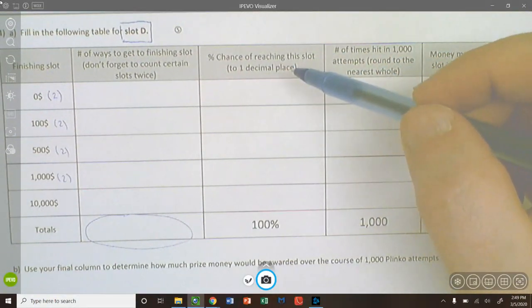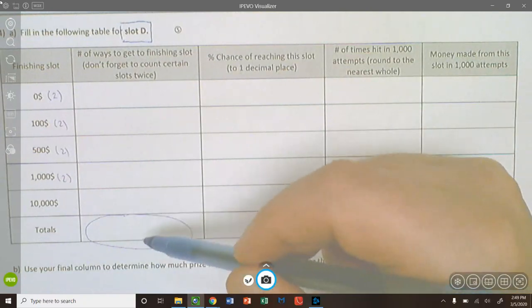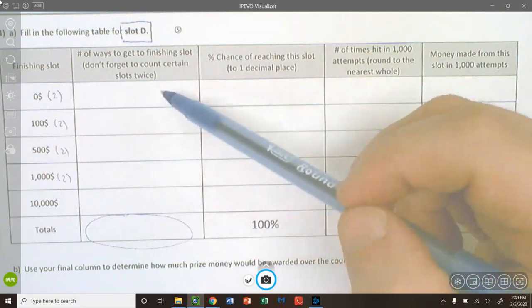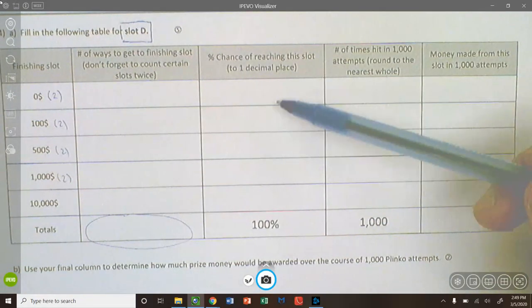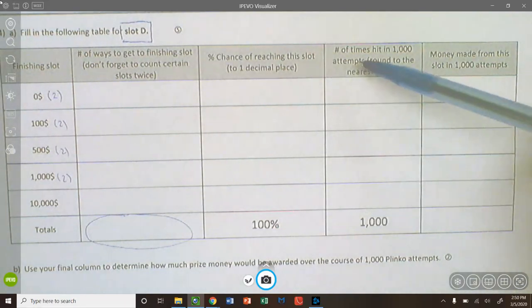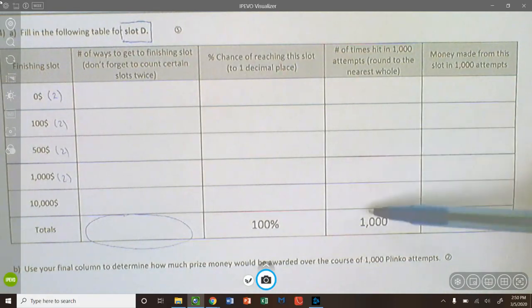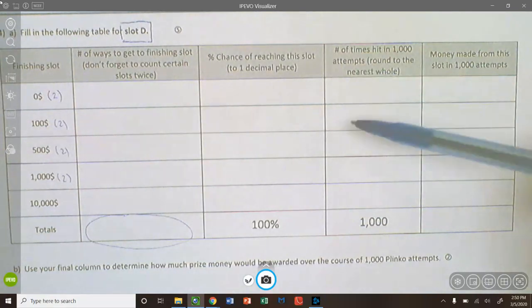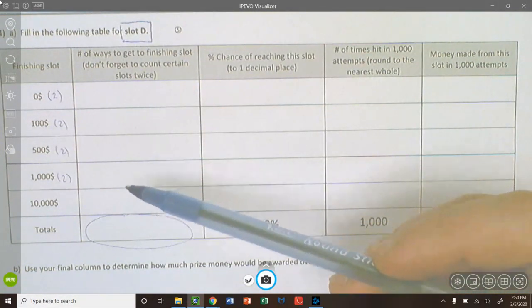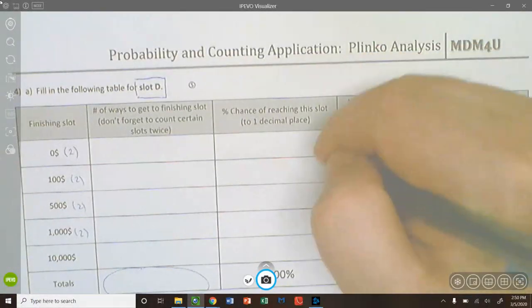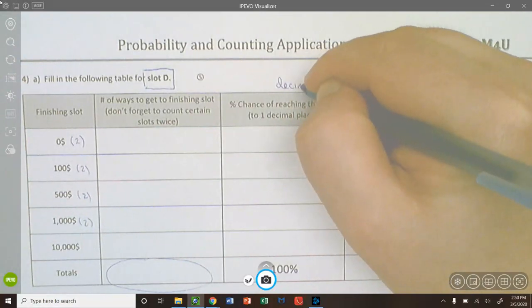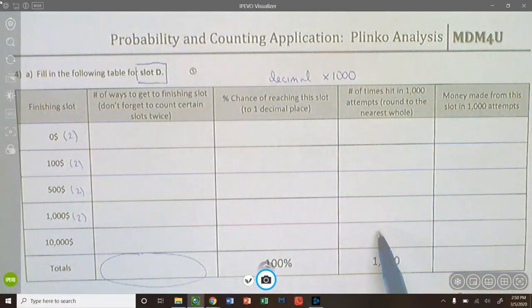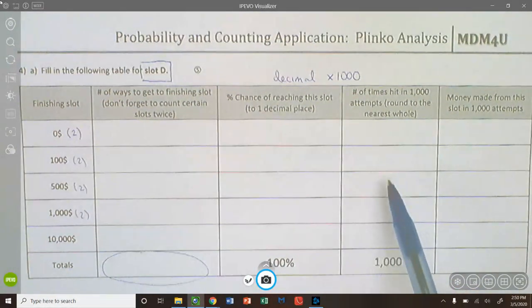So how many ways are there to get zero dollars? Don't forget to count the, there's two bins where you get zero. So don't forget that add those up, count them twice, two bins for a thousand and 500, 100, but there's just the one bin for 10,000. So I've tried to make that clear for you guys, but don't forget there's two of each of these slots and there's only one 10,000. So don't forget to multiply those by two. Get a total. The total you get here should match the total number of ways to reach the bottom that you got when you actually analyze slot D using Pascal's method. In this column, you're determining the chance of reaching this slot. So you know the total number of ways to the bottom, you've got the total number of ways to reach each slot. You could divide those. You could find the percent chance of reaching those slot round to one decimal place. And as a check, your answer should total because you've got all outcomes. It should add to a hundred percent.